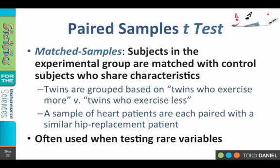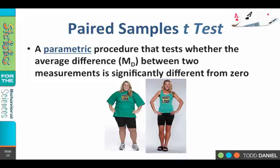We've purposely matched them. For instance, if one of our heart patients is a male smoker who weighs 280 pounds, we find a hip replacement patient who is also a male smoker who weighs about the same amount. What we're trying to do is control for variability between the patients. There's a technique called propensity score matching where we consciously pair up members of the control group with the experimental group. This is often used when testing rare variables, such as testing sociopaths in a prison setting, where we have to consciously pair them with some other group that is very similar.